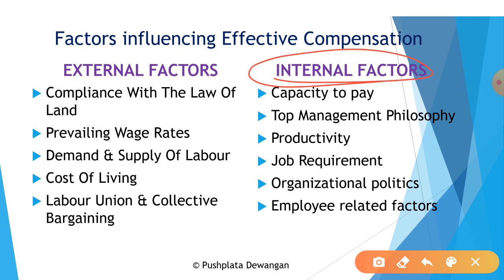Turning to internal factors, the first is the capacity to pay of the employer. The employer's ability to pay is an important factor affecting wages — not only for the individual organization but for the entire industry. This is a function of the financial position and profitability of the firm. The second internal factor is top management's philosophy — wage rates are affected by management values and attitudes, as wages and salary payments constitute a major portion of costs. Top management may also wish to pay higher wages to attract top talented candidates.